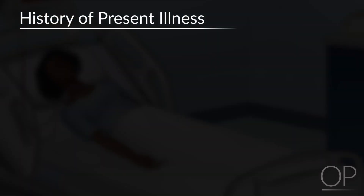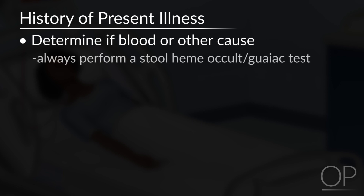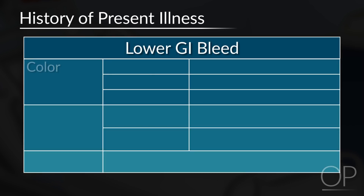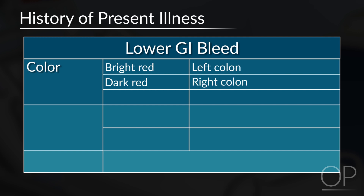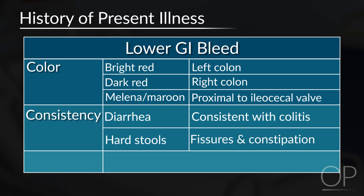The history of present illness for a patient with lower GI bleed first involves determining if there is actually blood, or is there another cause of bright red or black stools? You should always perform a stool hemocult or stool guaiac test. Evaluate the color of the blood: bright red indicates bleeding probably in the left colon; dark red stool indicates bleeding from the right colon; and if melena or maroon-colored stool, then bleeding is proximal to the ileocecal valve. You should also look at the consistency of the stool — diarrhea is more likely consistent with colitis, while hard stool is more likely consistent with fissures and constipation.